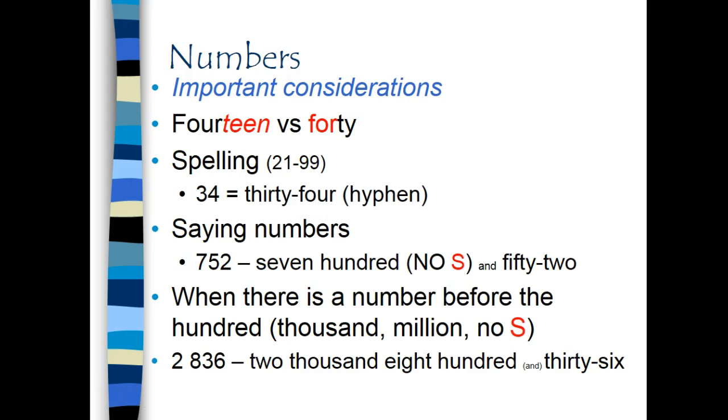When we say numbers, we do not place an S after 100, 1000, million, billion, etc. if there is a number before it. So in this case, I would say 752. I do not say seven hundreds and fifty-two.